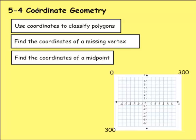We're on Lesson 4 of Chapter 5, which is Coordinate Geometry. First we're going to use coordinates to classify polygons, then find the coordinates of a missing vertex, and then find the coordinates of a midpoint.